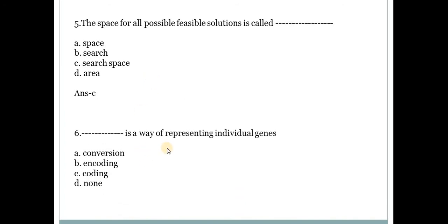What is a way of representing individual genes? Answer is B, encoding is the way to represent individual genes in genetic algorithms. On my channel I have series of soft computing that is I have tutorials on soft computing subjects through which you can learn soft computing and all topics of soft computing easily. Shall give link of all the videos in the description box.